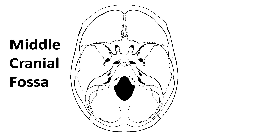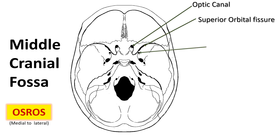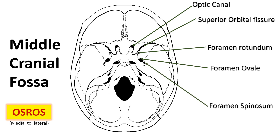In the middle cranial fossa, use 'OSEROIS' to remember the foramina from medial to lateral direction. They are the optic canal, superior orbital fissure, foramen rotundum, foramen ovale, and foramen spinosum. There is also the foramen lacerum, which is not included in the mnemonic.